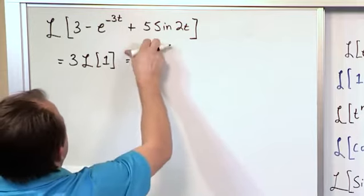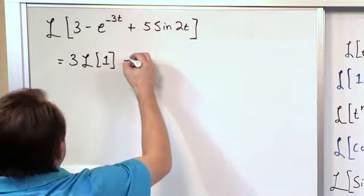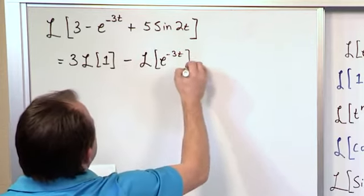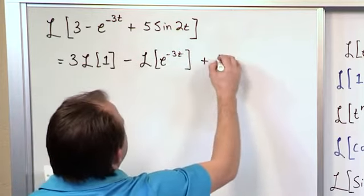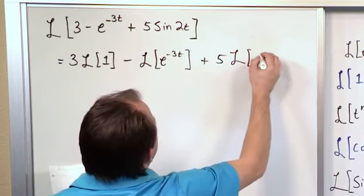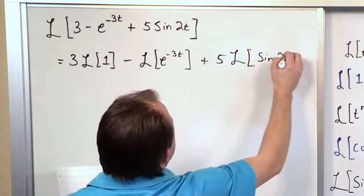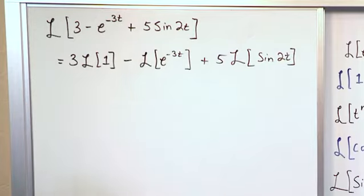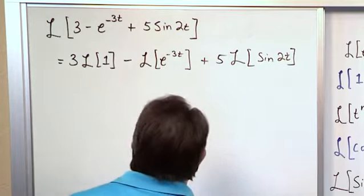This will be a minus sign and then you'll have Laplace Transform of e to the minus 3t, and then this will be 5 times the Laplace Transform of sine 2t. This helps us keep track of what we're actually transforming and what we're actually doing.